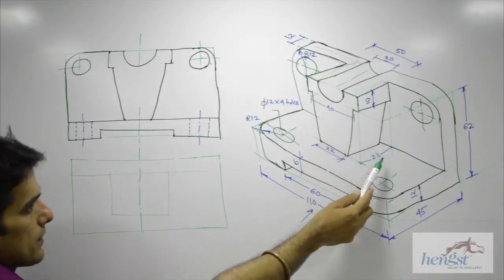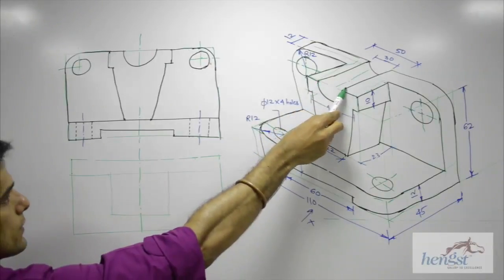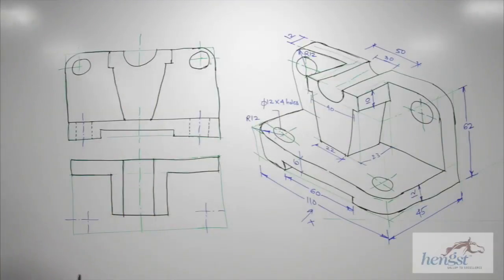Now see how much is this? This is 23. 23 plus 12 is 35. Total is 45, so 10 from here. Then we can project these two lines also.